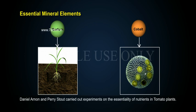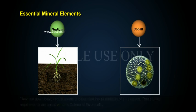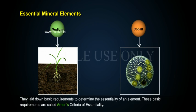Daniel Arnon and Perry Stout carried out experiments on the essentiality of nutrients in tomato plants. They laid out basic requirements to determine the essentiality of an element. These basic requirements are called Arnon's Criteria of Essentiality.